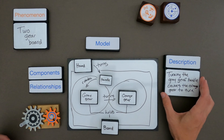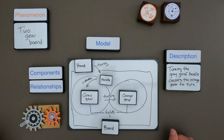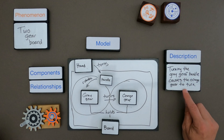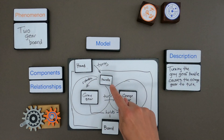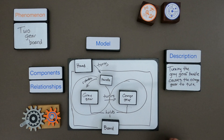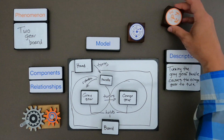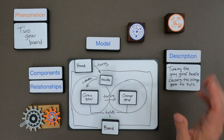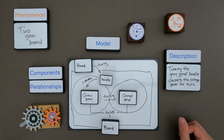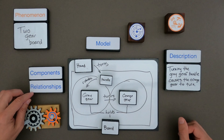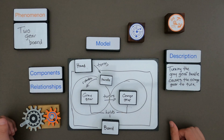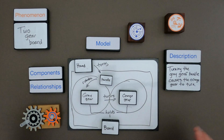Now my model has a description. When looking at a model I generally want to read the description first: turning the gray gear handle causes the orange gear to turn. Then I can look at the model and see that the hand turning the handle does indeed turn it. A model is not a phenomena - it's just a representation. A quick way to go through it is to define the important components, show how they're related, and then describe the model.